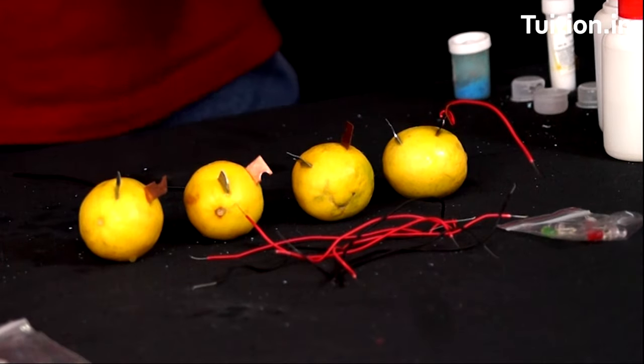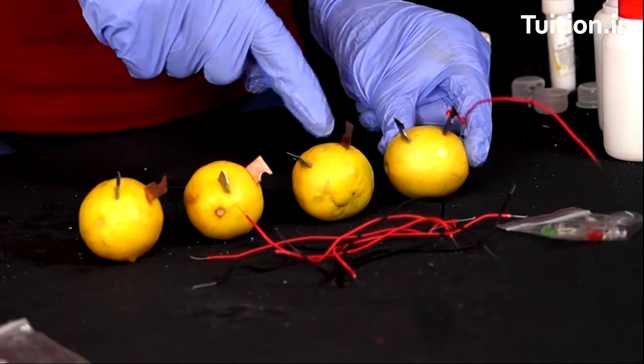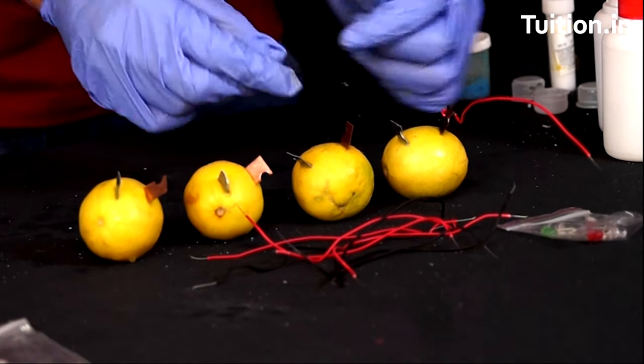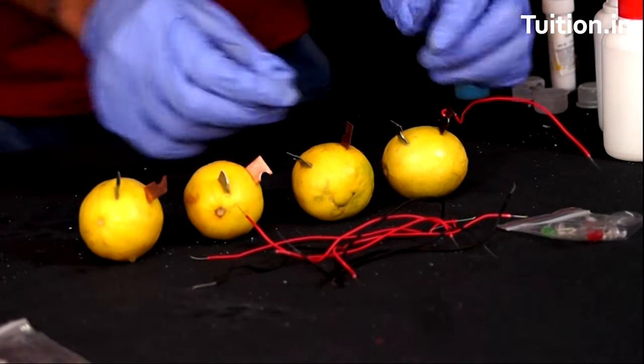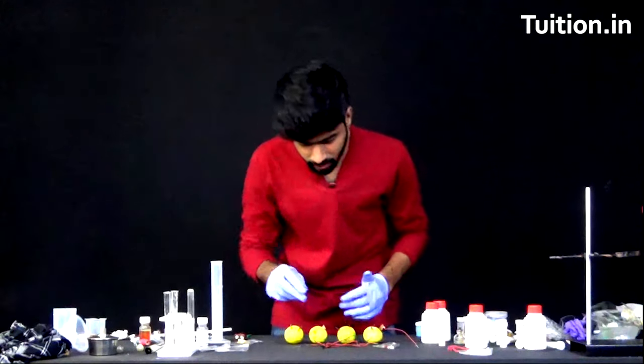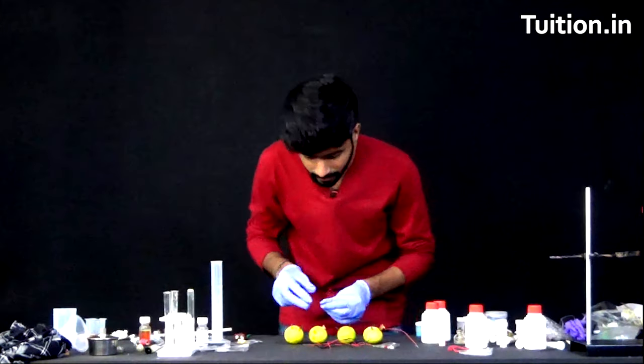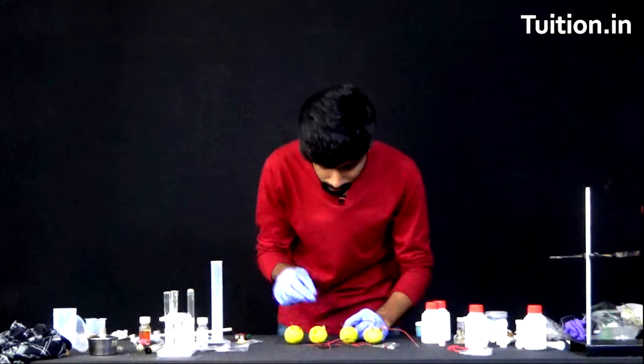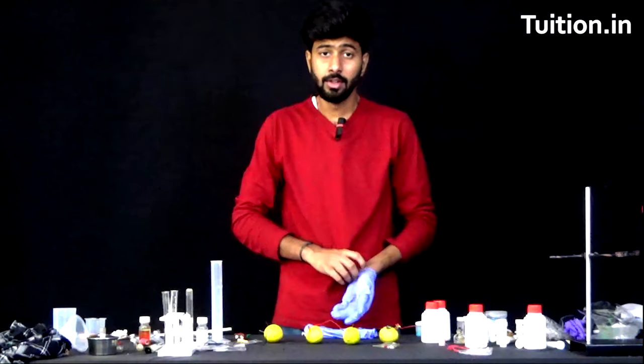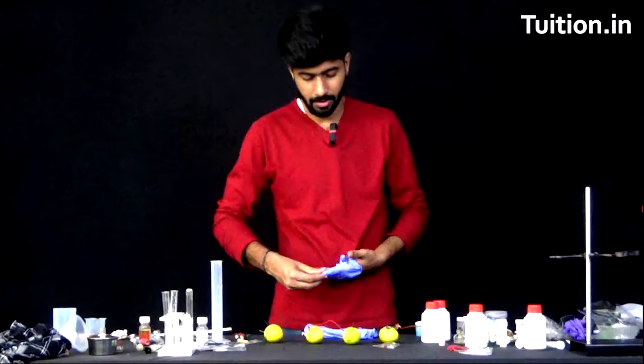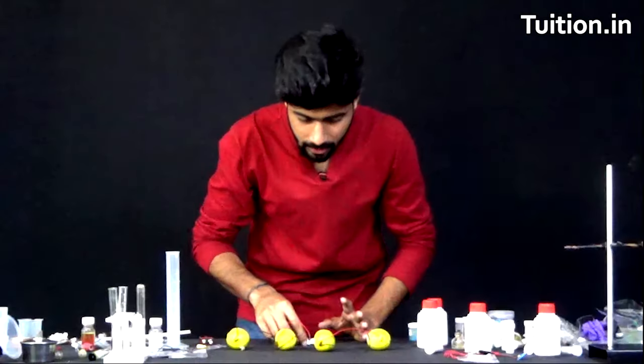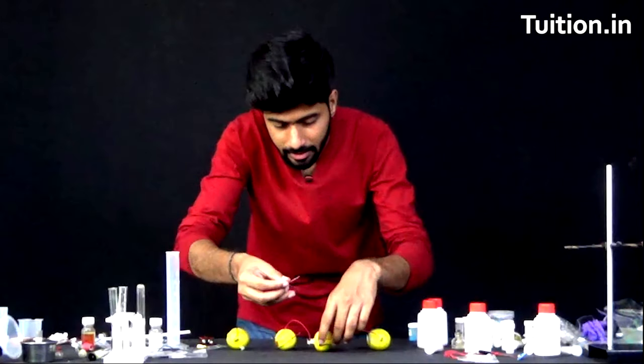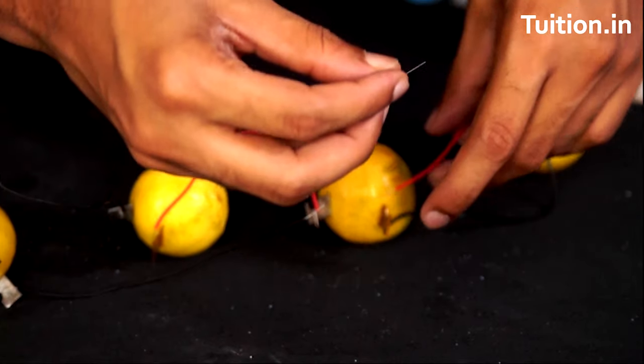And now we'll have to make zinc to copper, zinc to copper, zinc to copper alternate connections to set up the whole battery. Make sure that the connections are firm and the wire is touching the electrode properly. So the connections are now complete. We won't be needing these gloves anymore. So let us finally take this LED and connect it to the end terminals to see if it's glowing after all this connection.